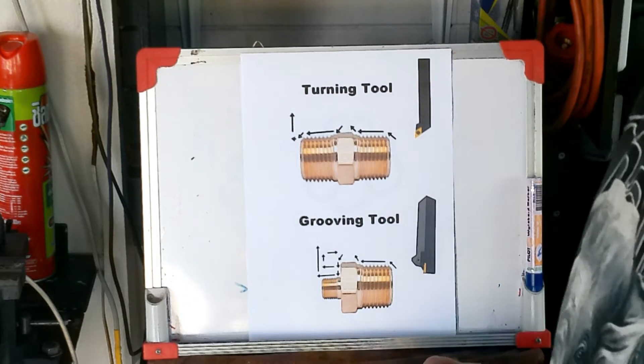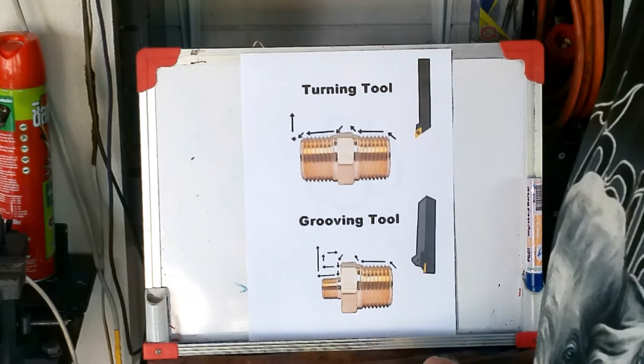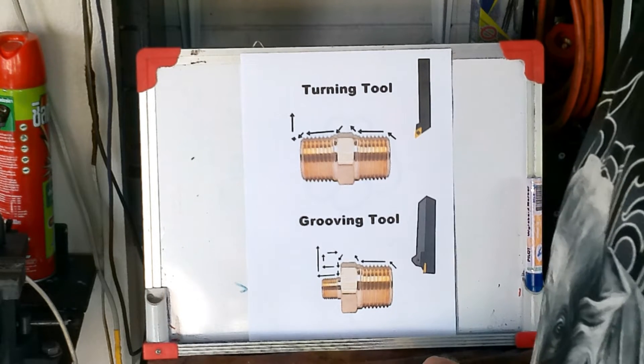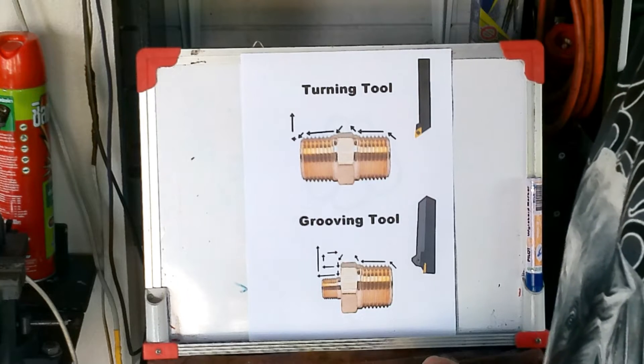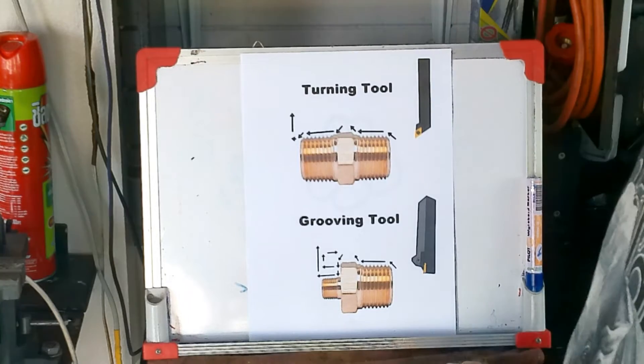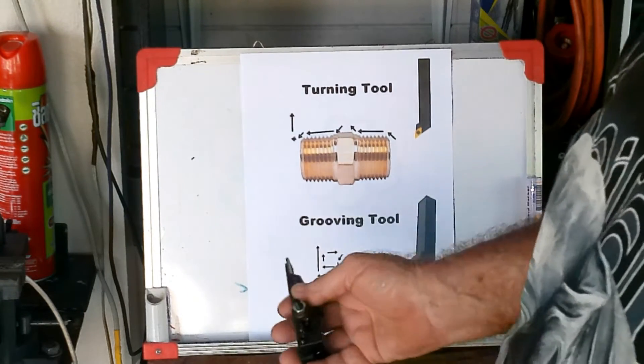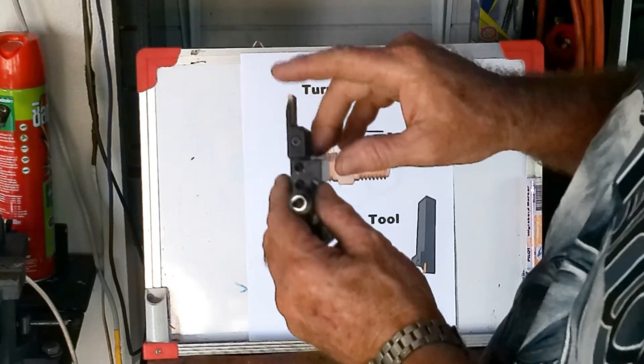Now we machined everything at 3,000 RPM and we ran that tool as fast as we could run it. It's a long time since I retired and I don't remember the exact feed rates, but they were pretty high. Now the way this works and it doesn't chatter is because you've got to remember this is flat across here.